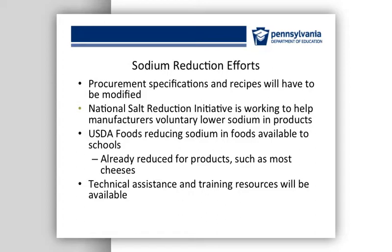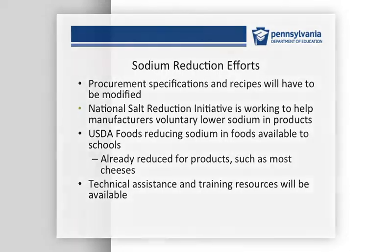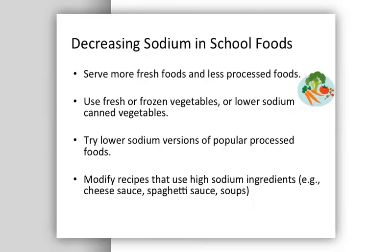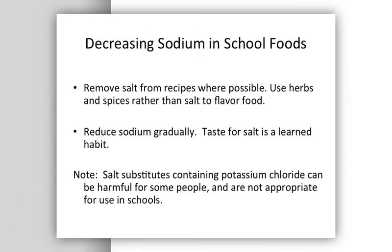USDA will also provide some additional technical assistance and training. When possible, serve more fresh foods and less processed foods. If you are unable to use fresh vegetables, frozen vegetables are a good alternative. You can also try lower sodium versions of various popular processed foods and modify recipes that use high sodium ingredients such as spaghetti sauce, cheese sauce, and soups.